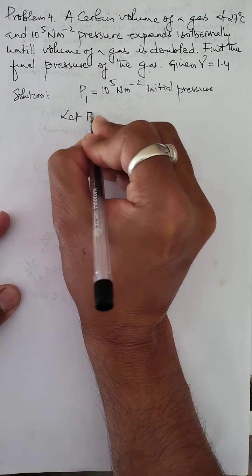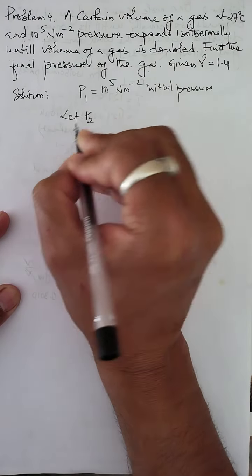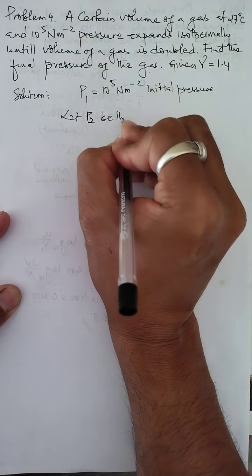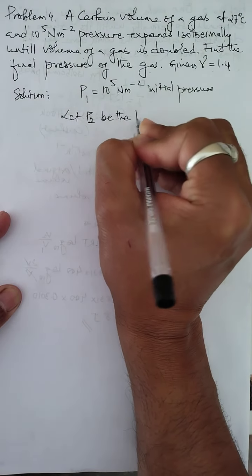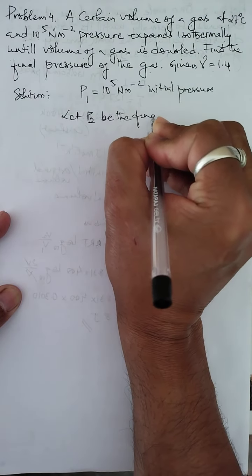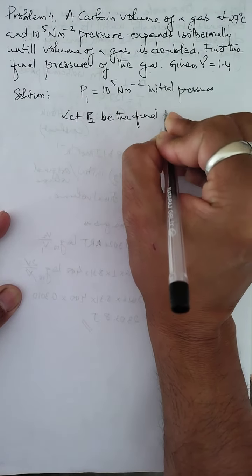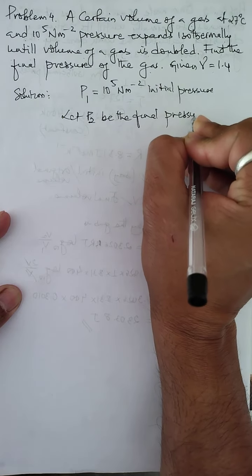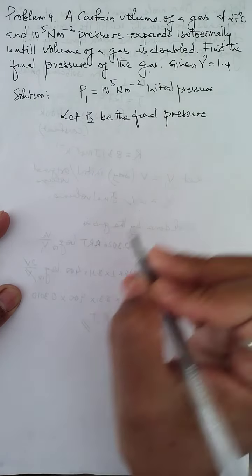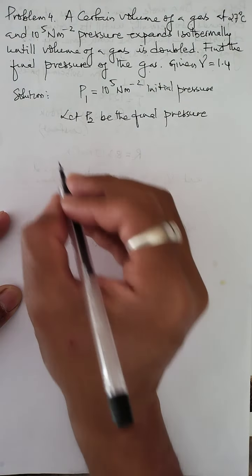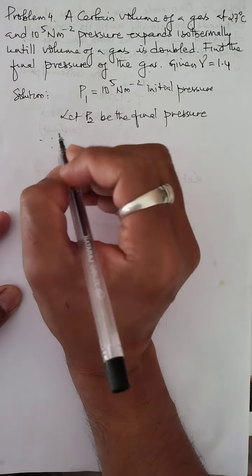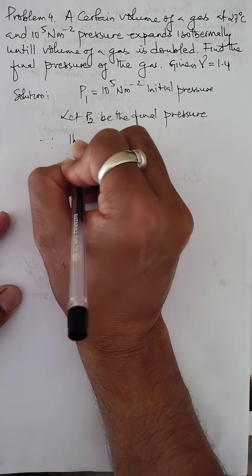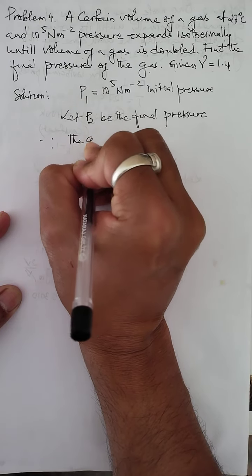To solve this, let P2 be the final pressure that we need to calculate. Since the gas expands isothermally, the temperature remains constant, and the ideal gas follows Boyle's law.